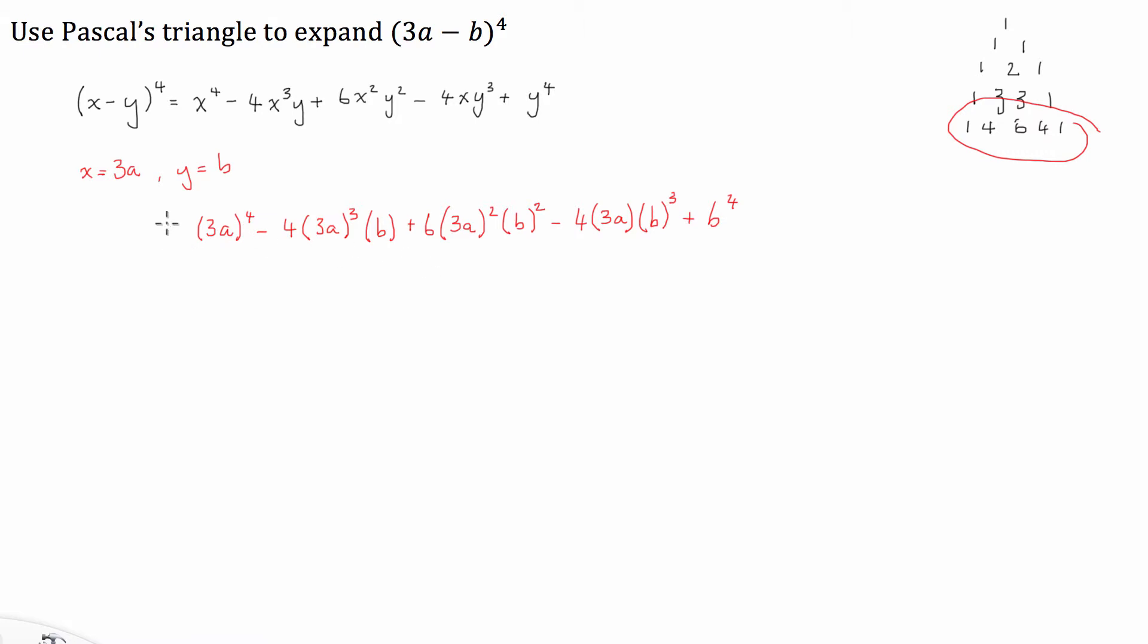Okay, so the next thing we're going to have to do is expand out all of the brackets. So here we're going to have 3 to the 4a to the 4 minus 4 times 3 to the 3a to the 3b plus 6 times 3 to the 2a to the 2b to the 2 minus 4 times 3ab cubed plus b to the 4.